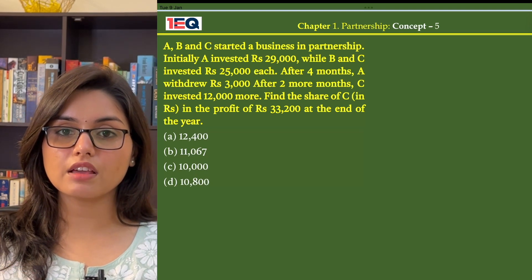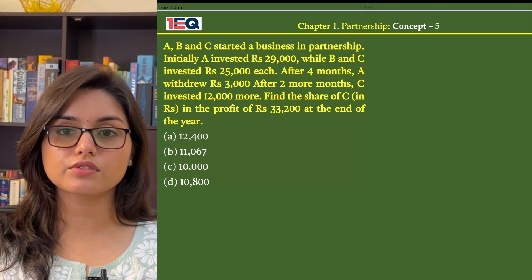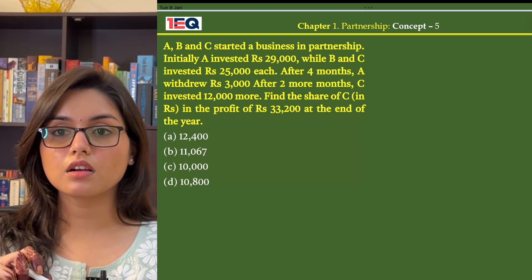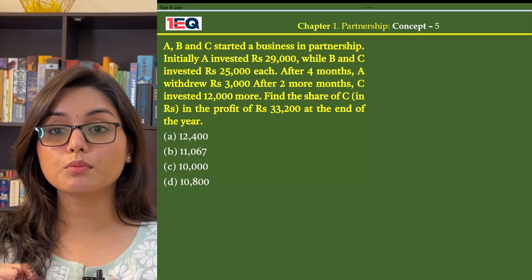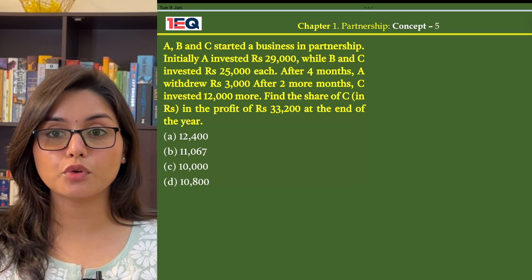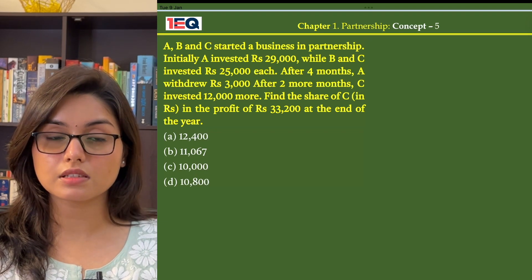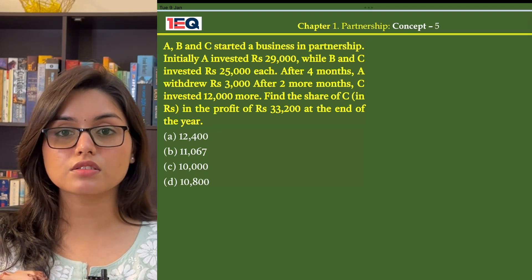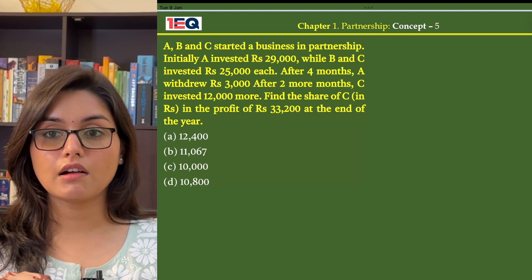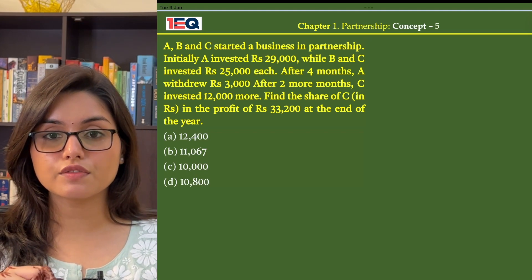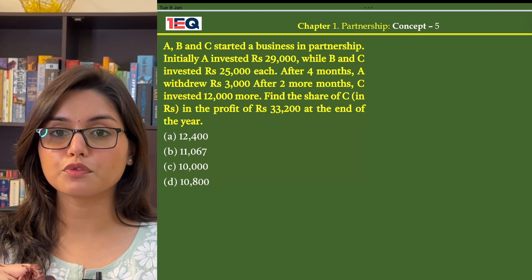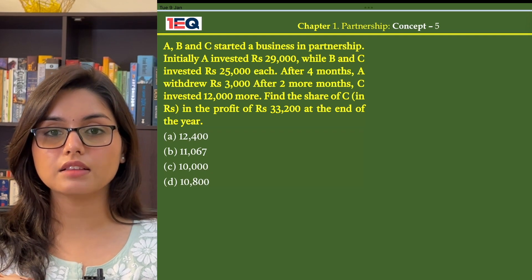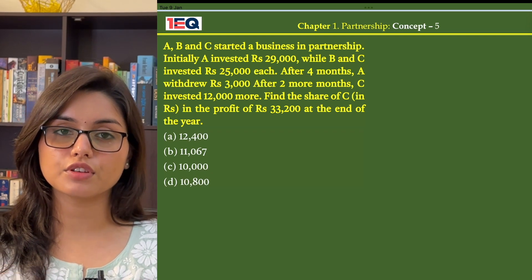After 4 months, A withdrew Rs 3,000. After 2 more months — that means after 6 months total — C invested Rs 12,000 more. Find the share of C in the profit of Rs 33,200 at the end of the year.